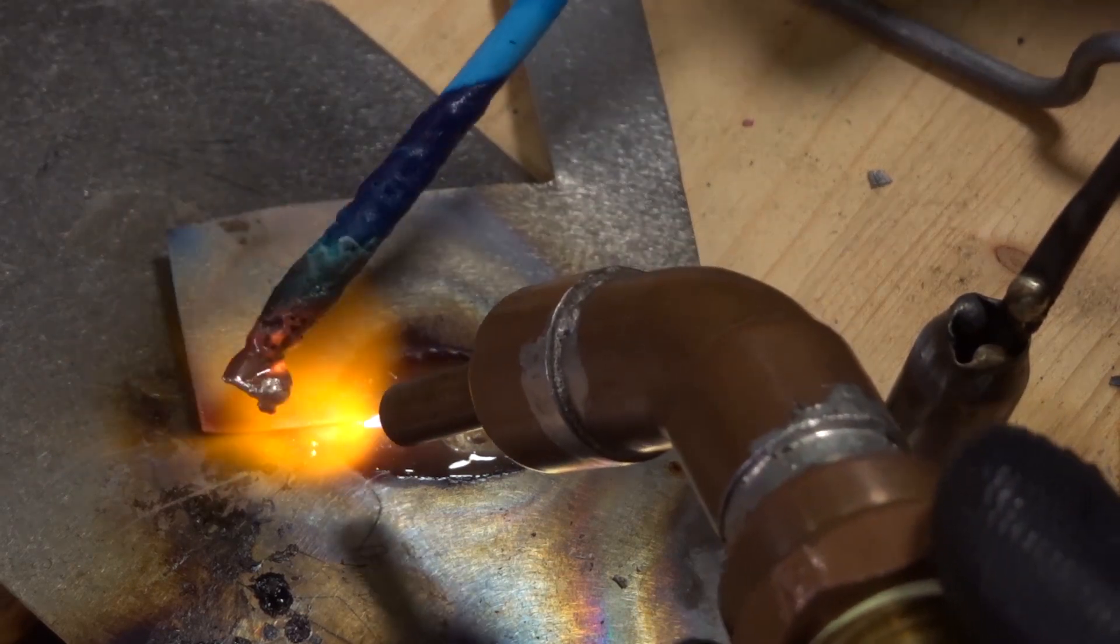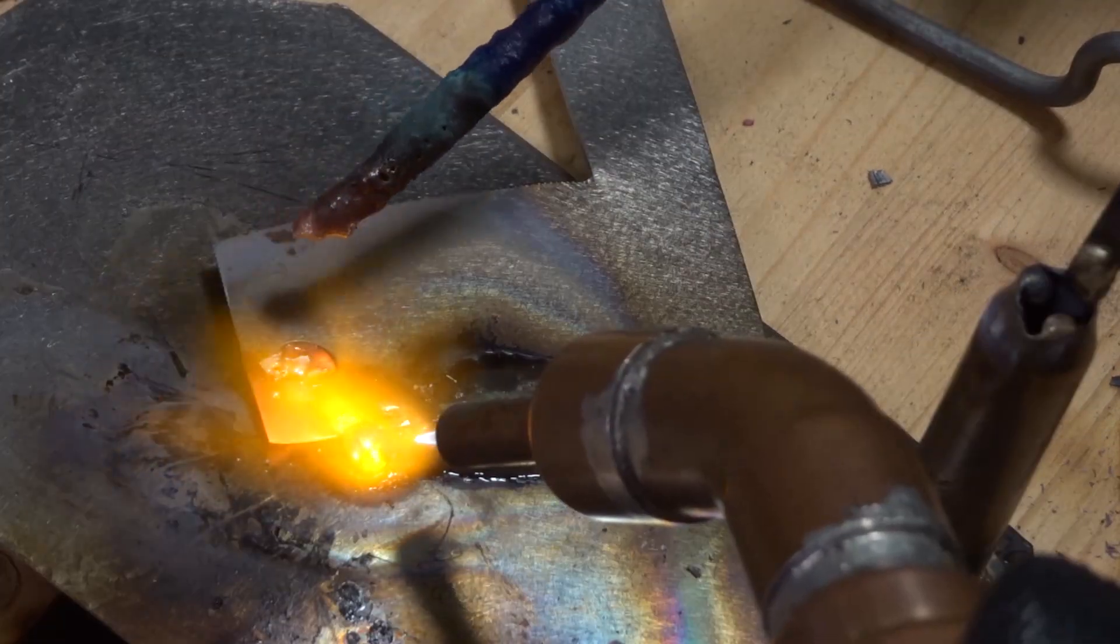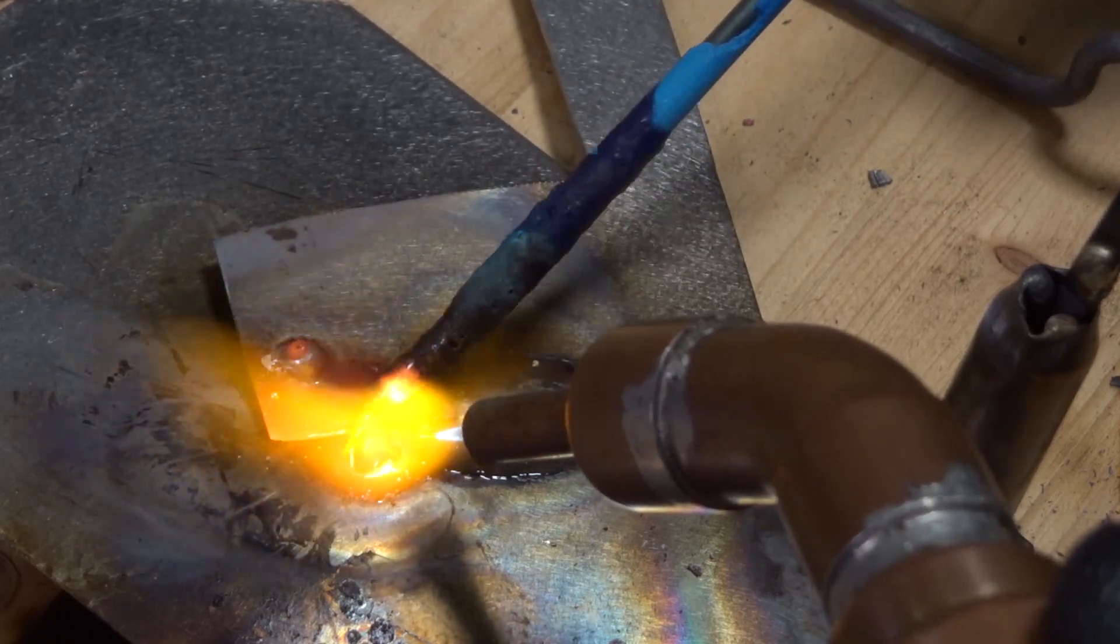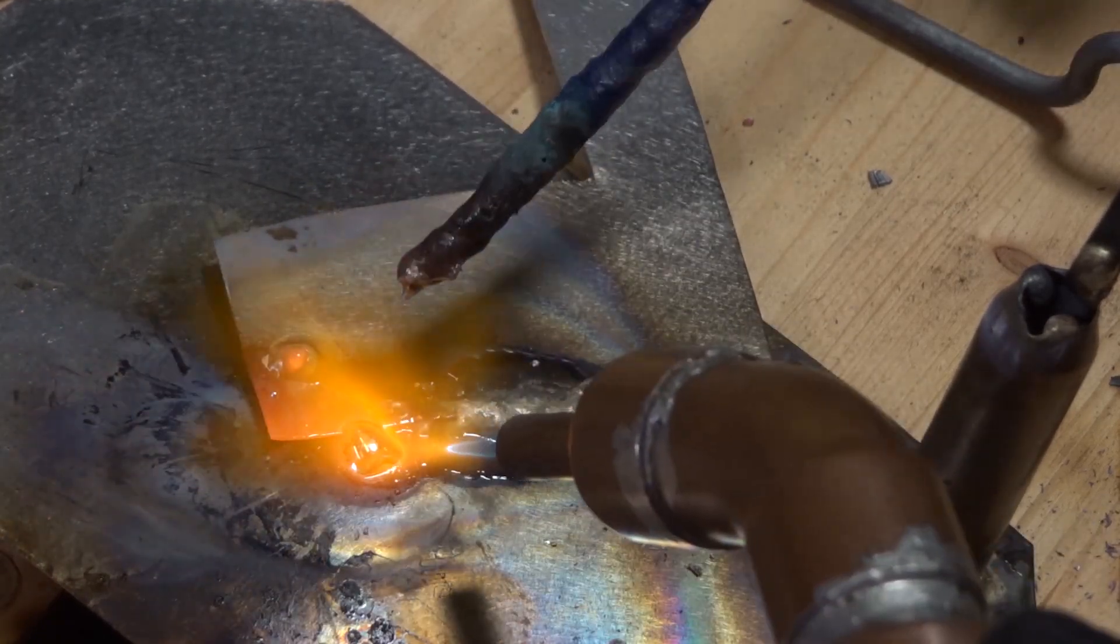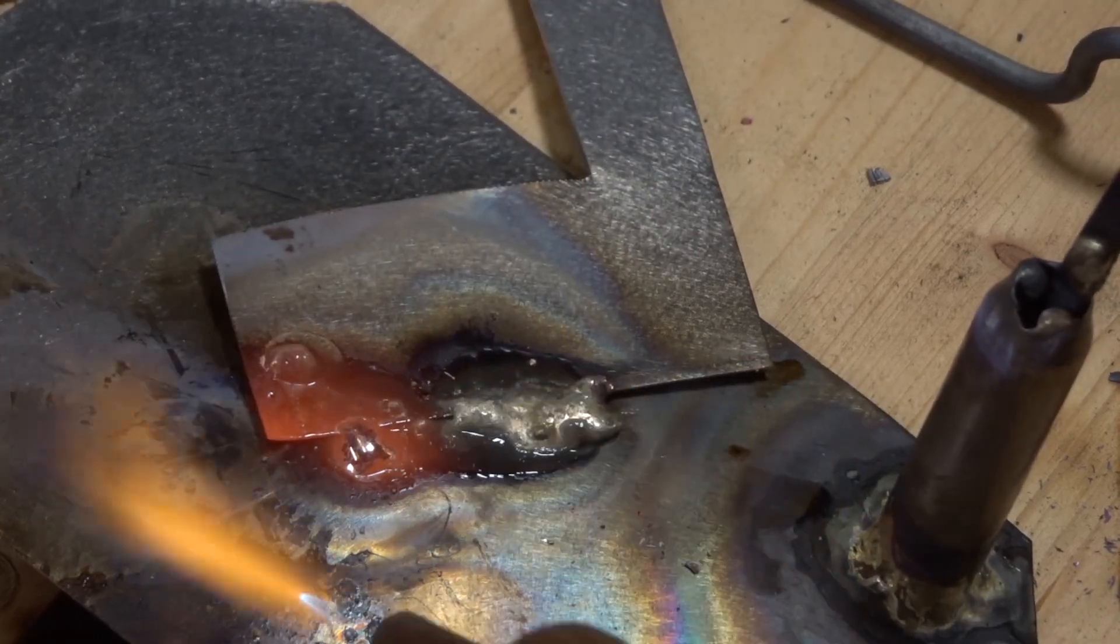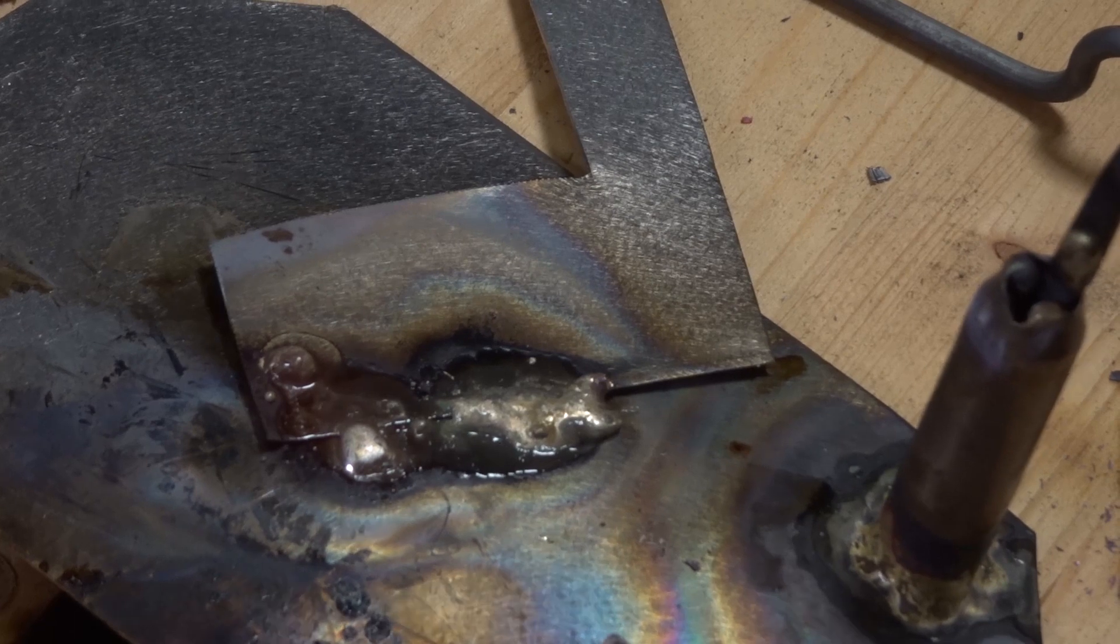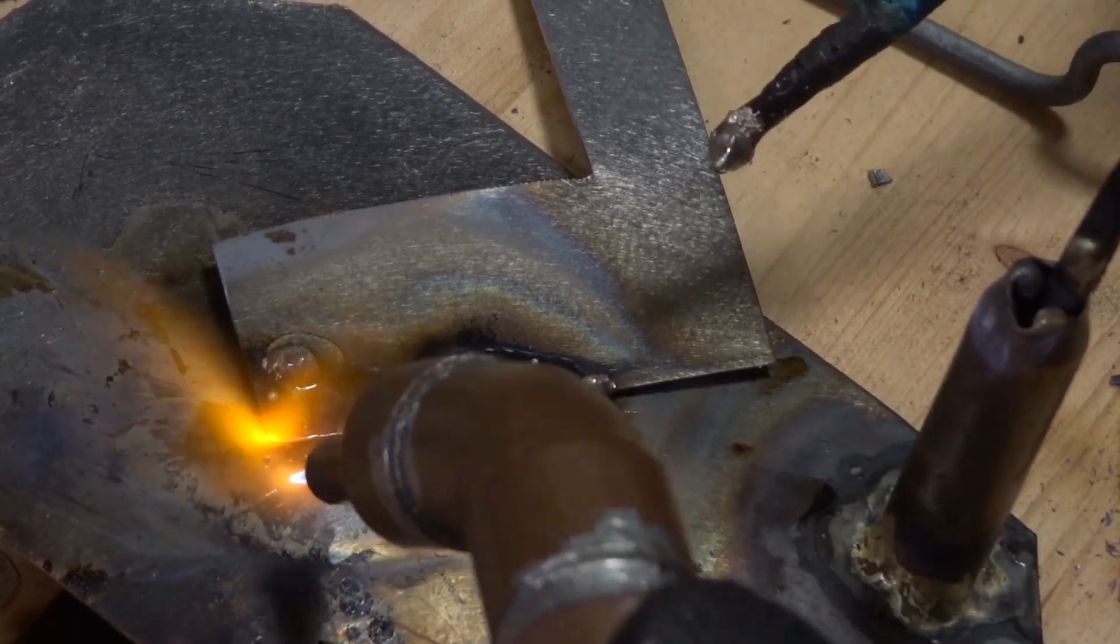Well it's doing a really good job of getting that puddle to stay liquid. I can't do this with my normal propane or MAP gas torch. Like that looks like a decent bead right there. Let's just pop a bead right on the corner there. Let's let that cool off.